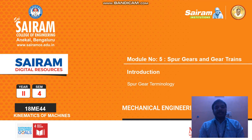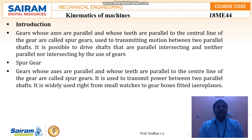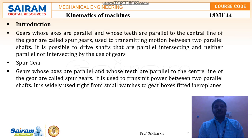This is what we are going to be discussing in this module — about spur gears and gear trains. Gears whose axles are parallel and whose teeth are parallel to the center line of the gear are what we call spur gears. Both the gear axis and the gear teeth are parallel to the center line — that type of gear we call a spur gear.